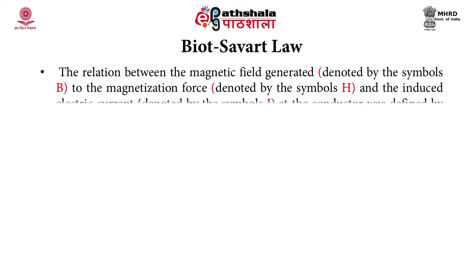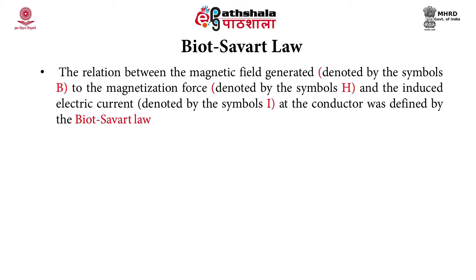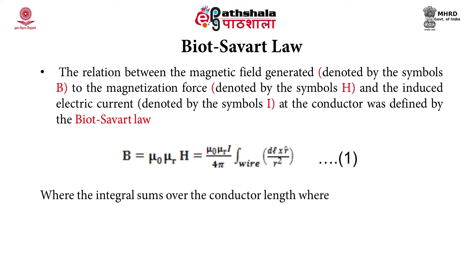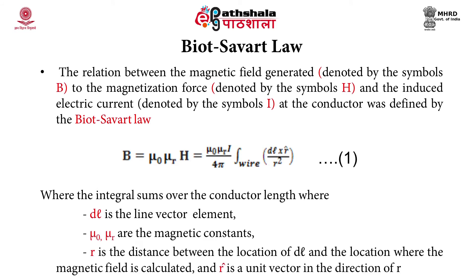Let's see the Biot-Savart law. This states the relation between the magnetic field generated, denoted by symbol B, to the magnetization force denoted by symbol H, and the induced electric current denoted by symbol I at the conductor. In the equation, B equals μ₀μᵣH, further integrated. The integral sums over the conductor length, where dL is the line vector element, μ₀μᵣ are the magnetic constants, R is the distance between the location of dL and where the magnetic field is calculated, and R-cap is a unit vector in the direction of R.